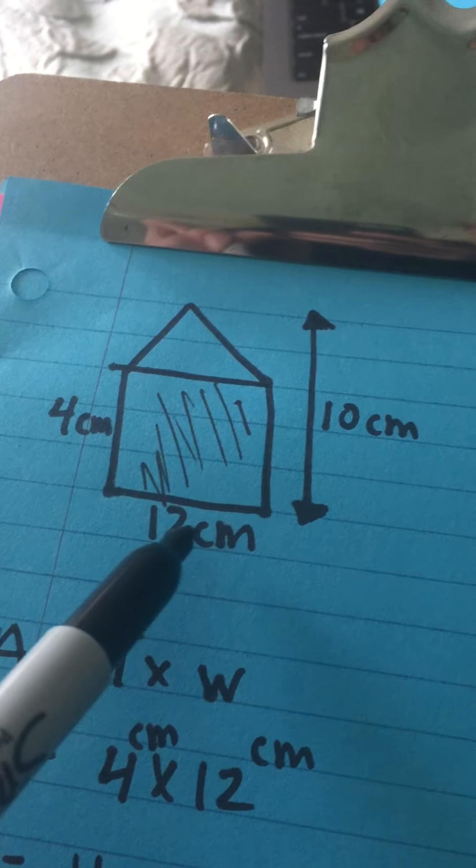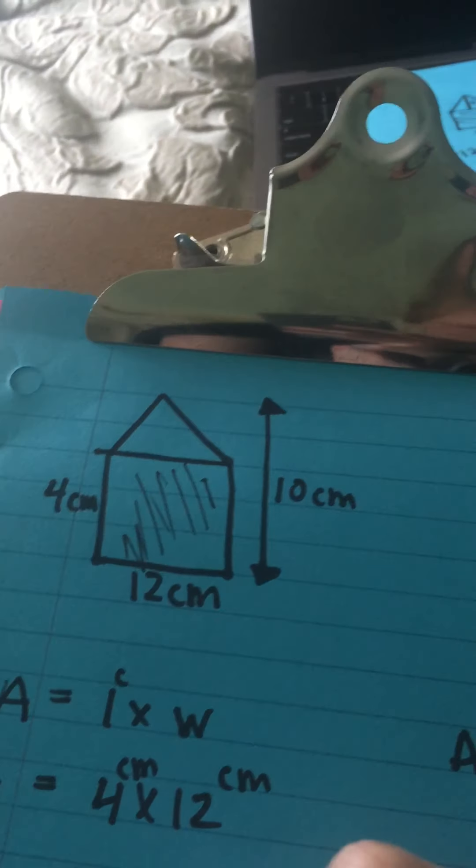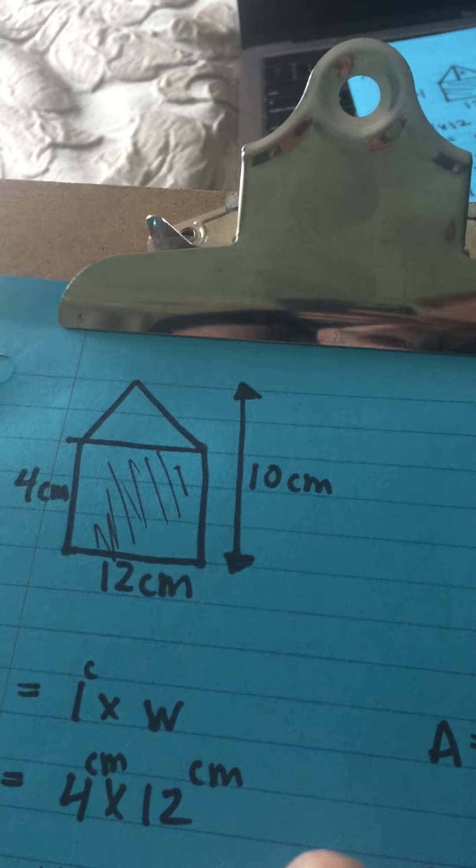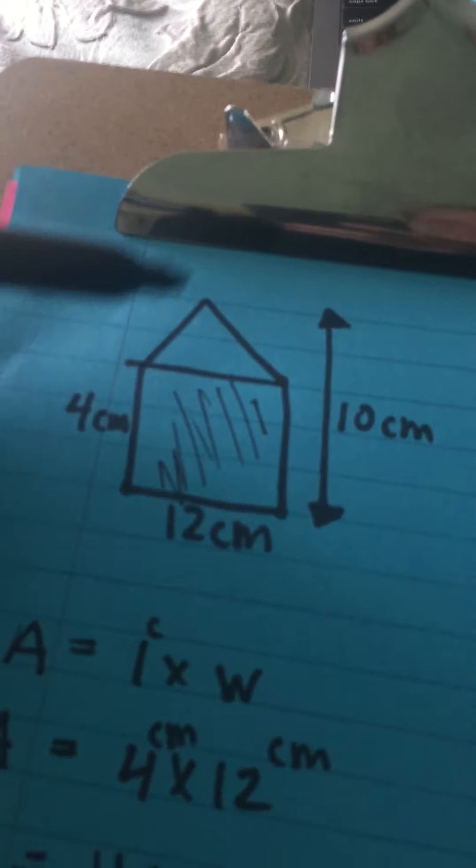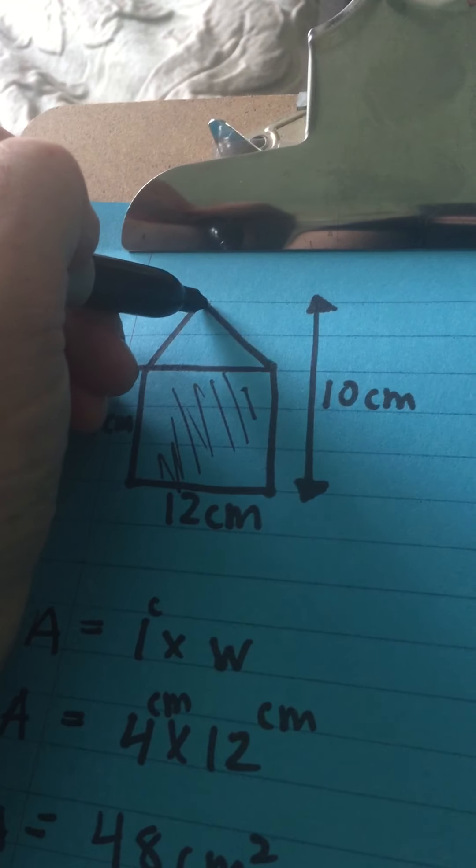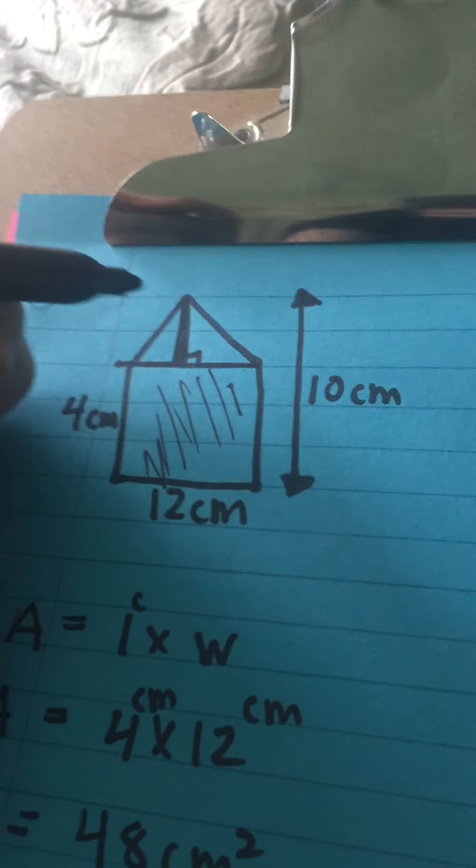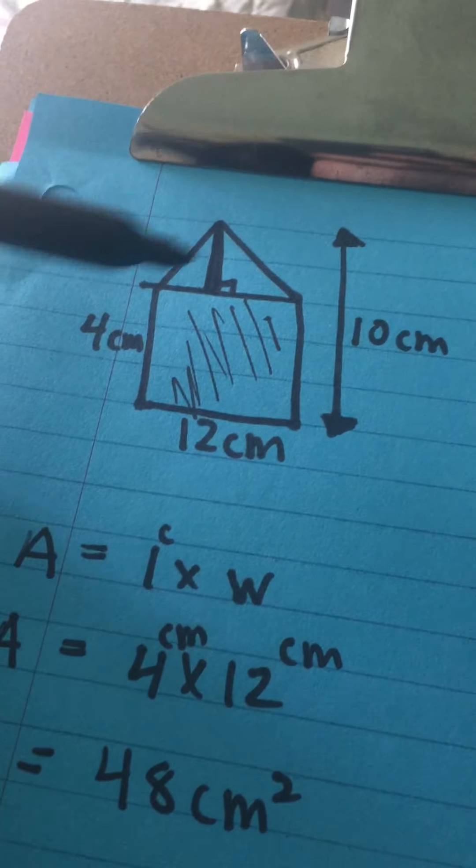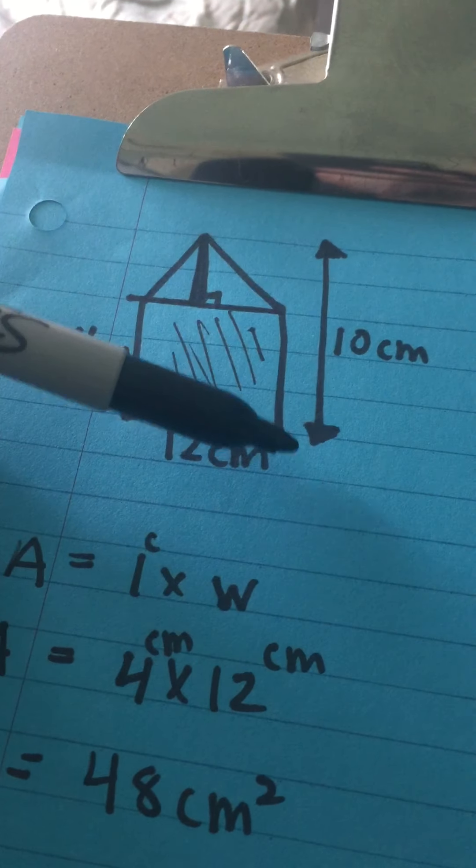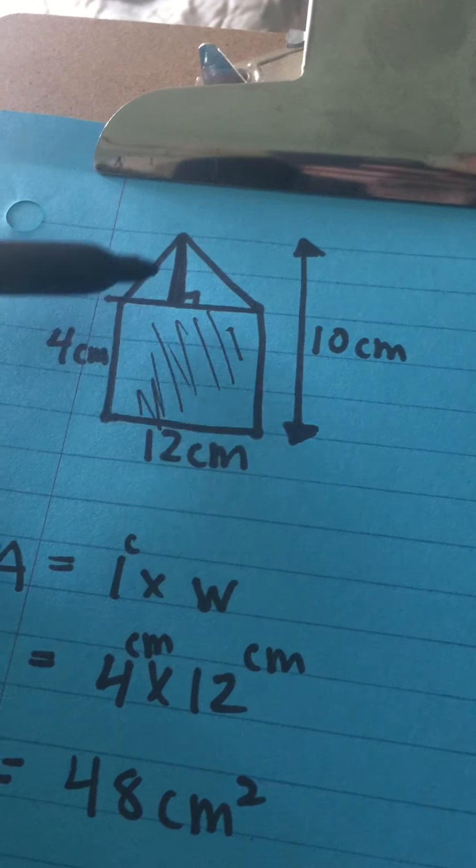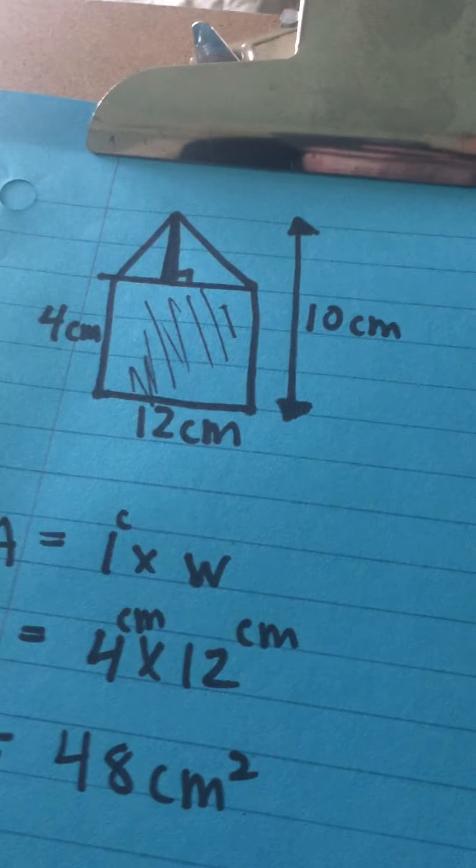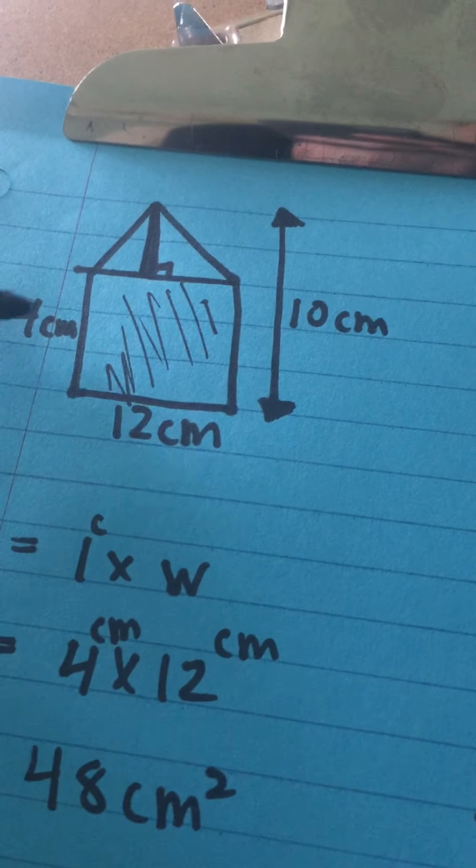We need to find - we already know the base. The base is same as this 12 centimeters. But now we need to find the height. So I'm going to just make a line here because we know that we can make a straight line here to make a right angle, and that is the height of the triangle. So if this whole height from this line to the top of here is 10 centimeters and this is 4 centimeters, what would this length be?